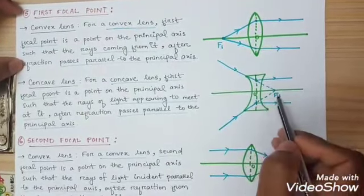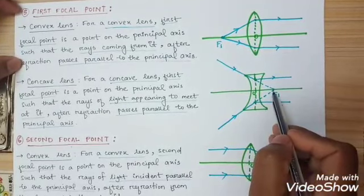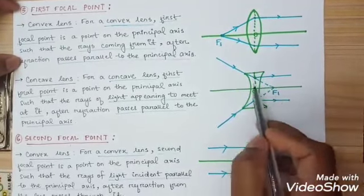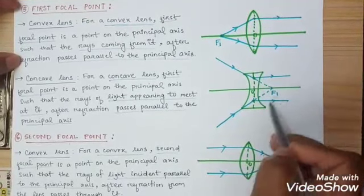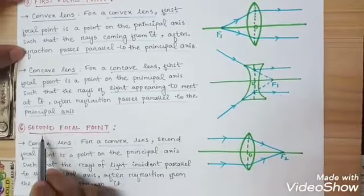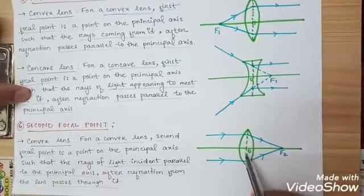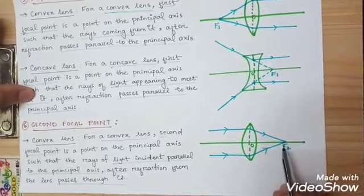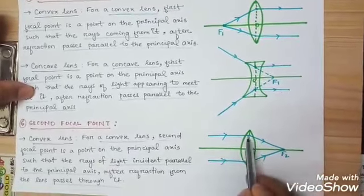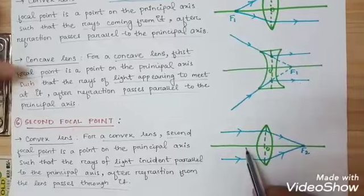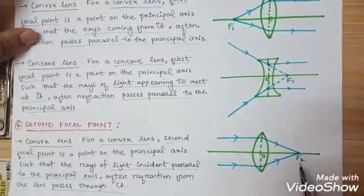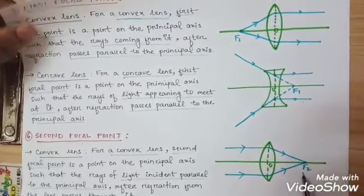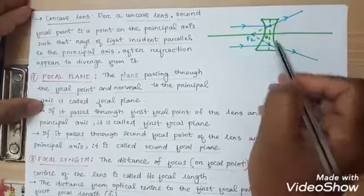In a concave lens, the first focal point is the point on the principal axis where rays appear to meet after refraction. The second focal point F2 is where refracted rays actually meet at a point. We also have the second focal point of the concave lens.